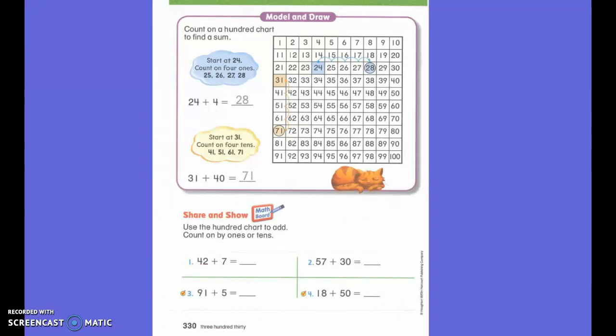If I have 24 plus 4, I'm going to start at 24. And do I have 10s or extra 1s that I'm going to be moving? You're right. It is just the 1s. So if I'm moving the 1s, I'm going to move to the right 4 times to find my answer. So 24 plus 4 equals 28.